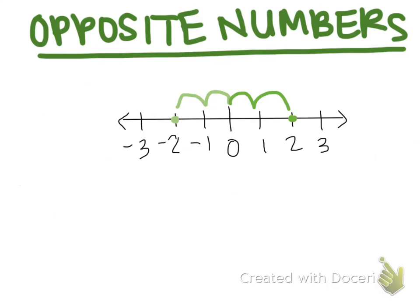meaning they are the equal distance from zero in opposite directions. Negative two and positive two are opposites.